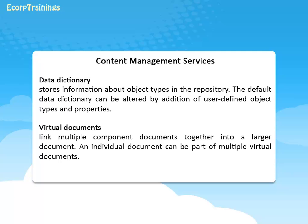Data dictionary stores information about object types in the repository. The default data dictionary can be altered by addition of user-defined object types and properties. Properties are also known as attributes, and the two terms are used interchangeably to refer to metadata. Virtual documents link multiple component documents together into a larger document. An individual document can be part of multiple virtual documents. The assembly of virtual documents can also be controlled by business rules and data stored in the repository.